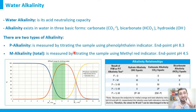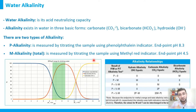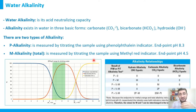The second type is called M-alkalinity, where M stands for methyl red color indicator, used when titrating a water sample with sulfuric acid to neutralize alkaline species. Unlike P-alkalinity, M-alkalinity can be measured for all types of water regardless of pH — whether it is 6, 7, 8, or any other value. M-alkalinity is therefore called the total alkalinity.